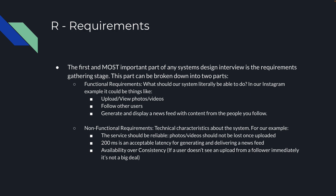The first and most important part of any systems design interview is the requirements gathering stage. This can be broken down into two sections. The functional requirements are what our system should literally be able to do. In our Instagram example, that could be things like uploading or viewing photos and videos, following other users, and generating and displaying a news feed with content from the people you follow.